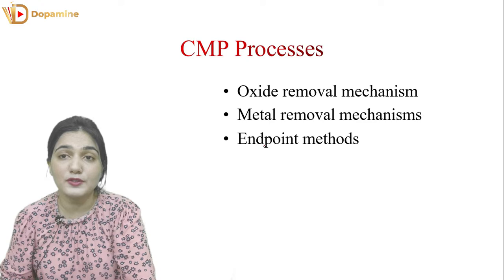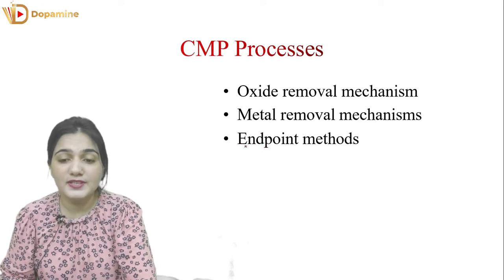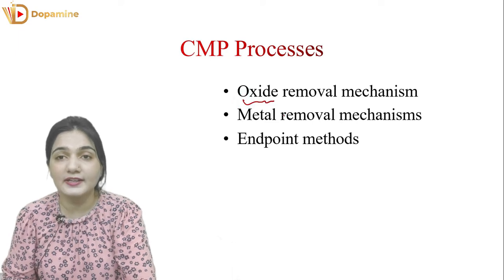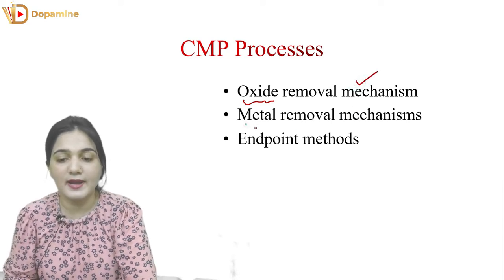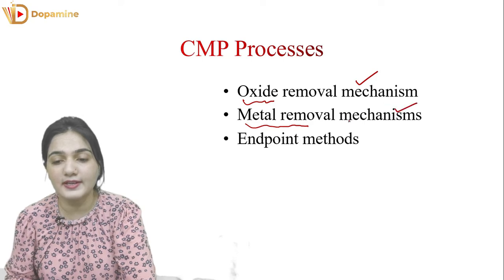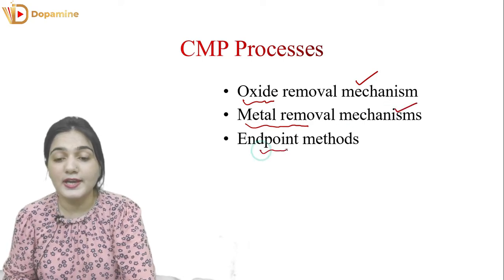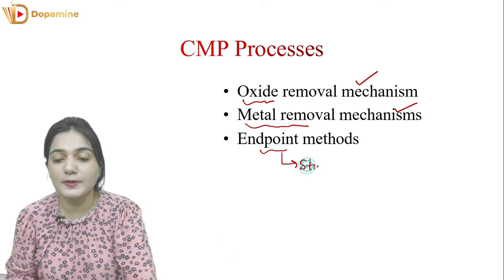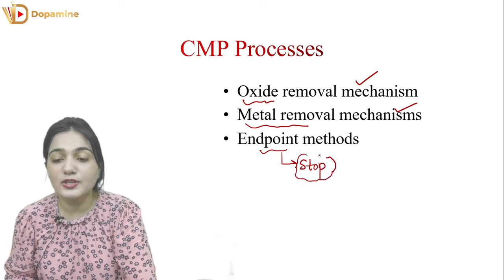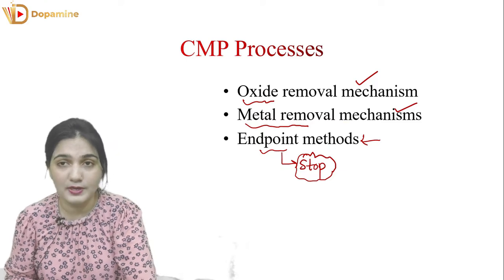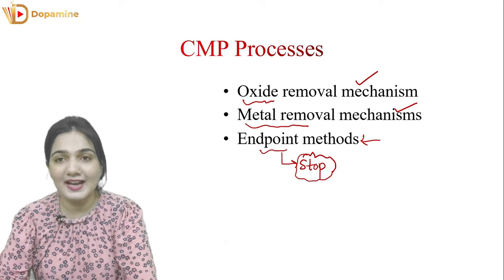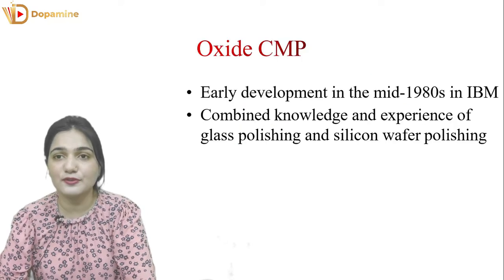First, we will see which processes we have to discuss in detail. First, we will see CMP for oxide — oxide is a process for dielectric removal. We will understand the mechanism of metal removal. Then, we will discuss end point detection. End point means when the whole process is stopped. We have some indicators for that — what is the method of end point detection, and how we know when to stop the process. These are all things we will cover today, and that's why this video is going to be really important.